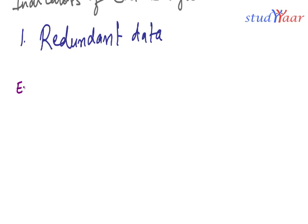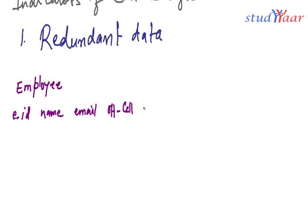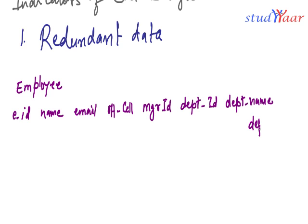Let's assume I have a relation named employee. In this I have employee ID — or rather just EID. I have the employee's name, the employee's email, and the employee's official cell number — the cell number of the BlackBerry given by the office. Then I have the manager's ID, department ID, department name, and department location.